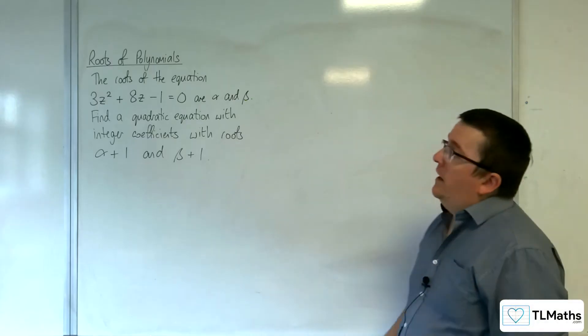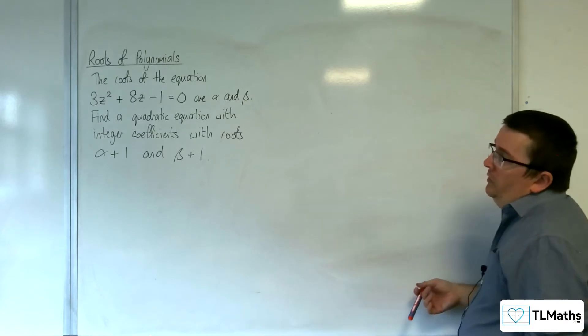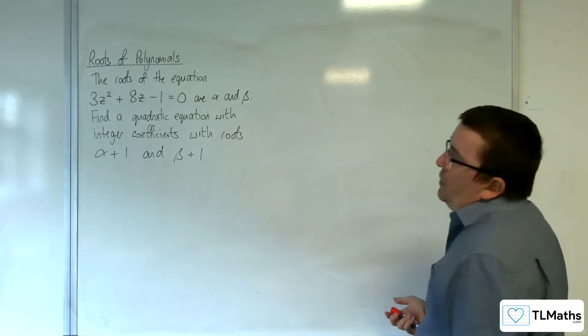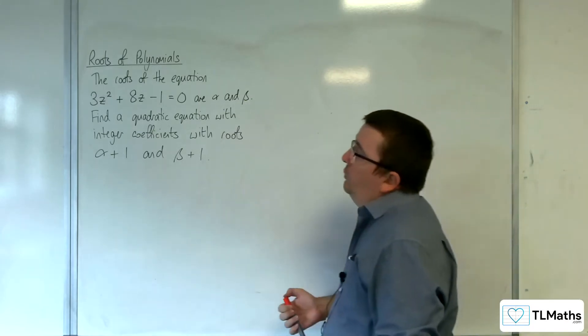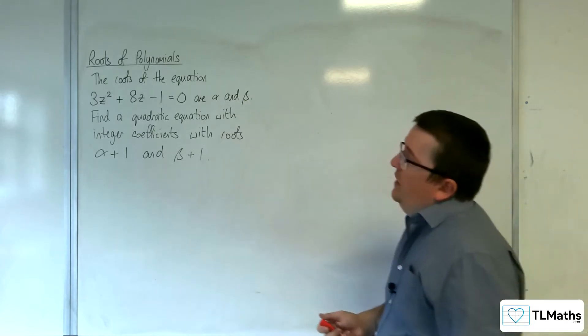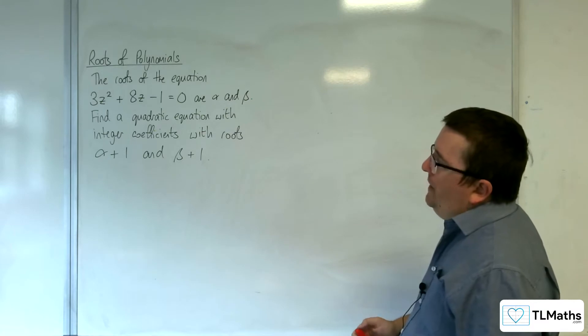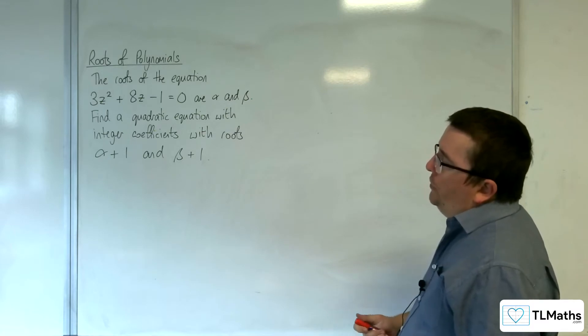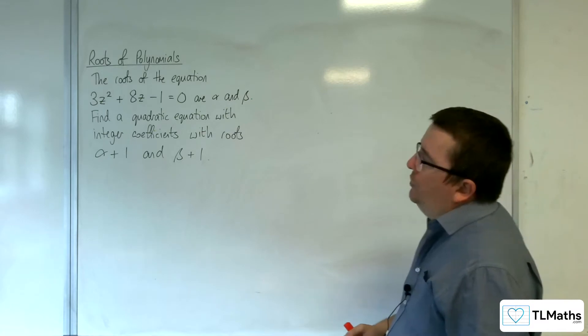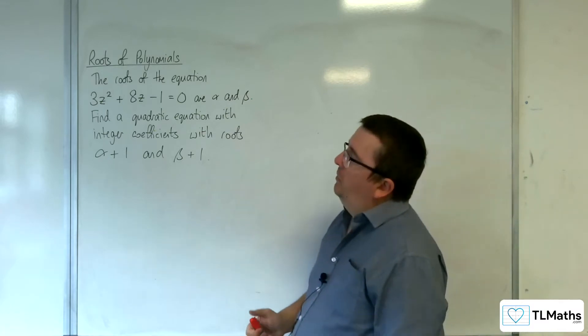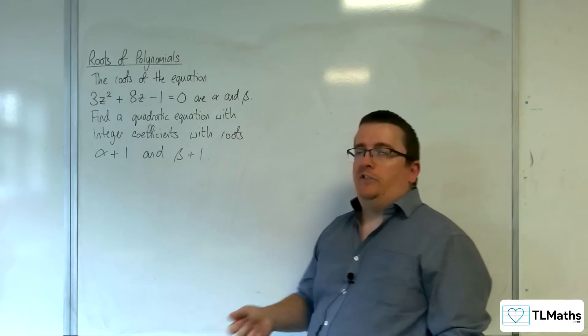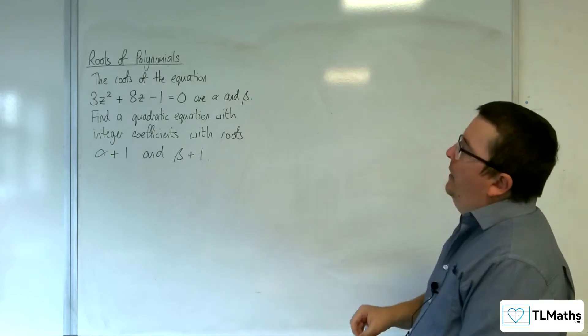In this video we're going to be looking at this example. The roots of the equation 3z squared plus 8z take away 1 equals 0 are alpha and beta. Find a quadratic equation with integer coefficients with roots alpha plus 1 and beta plus 1.